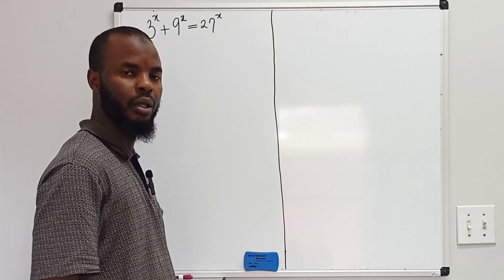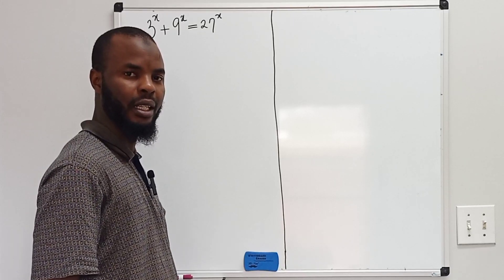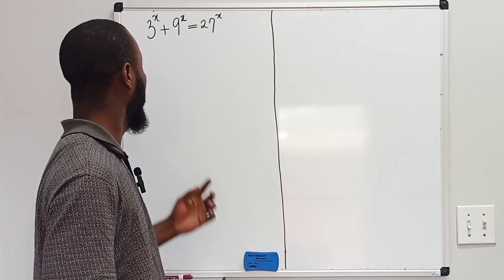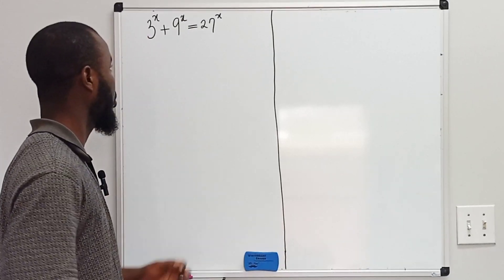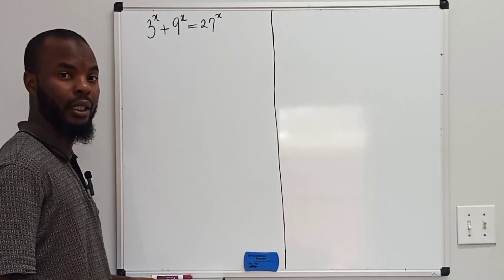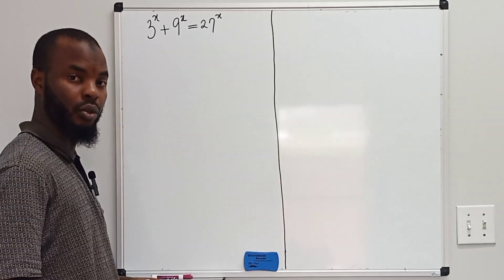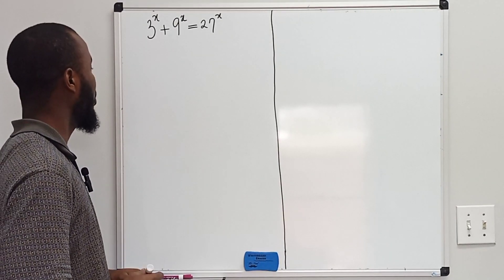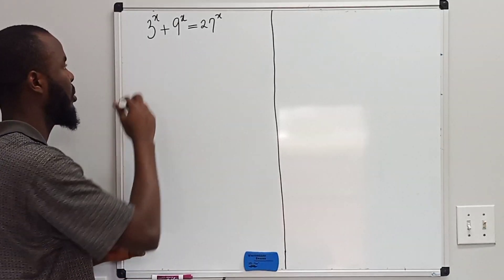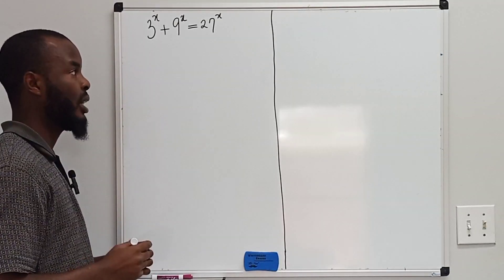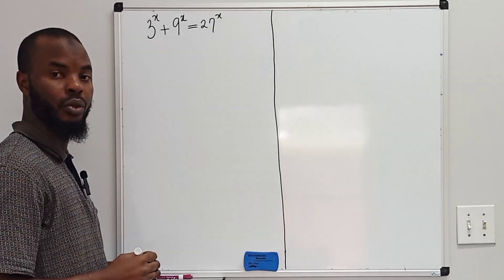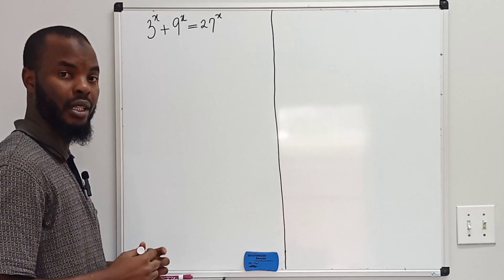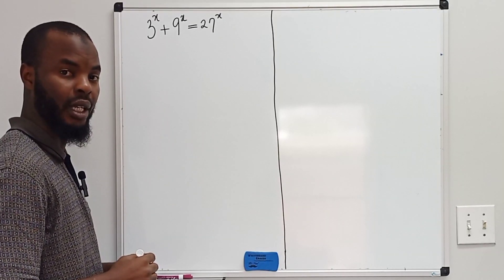Welcome to the other class. Today, we want to solve for x in the equation given to us above here. We have 3 to the power of x plus 9 to the power of x equals 27 to the power of x.